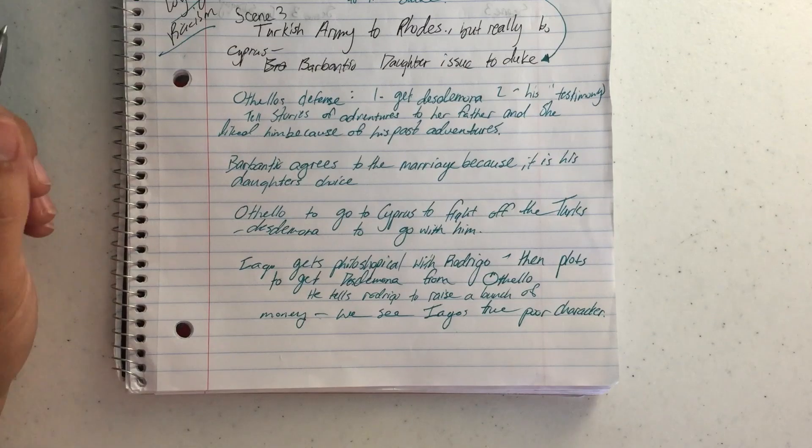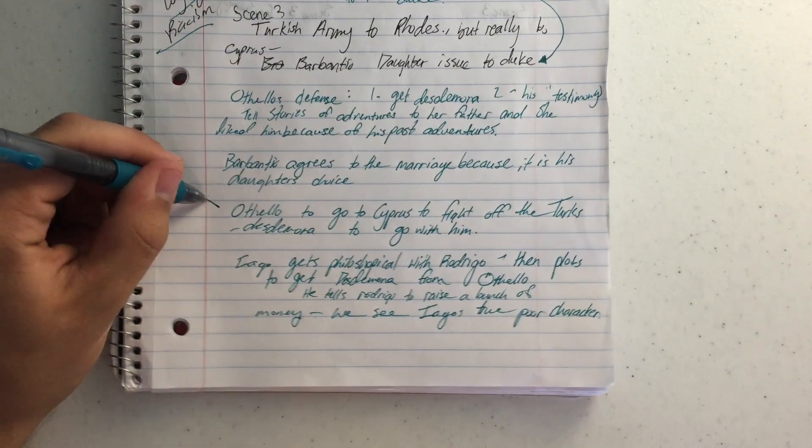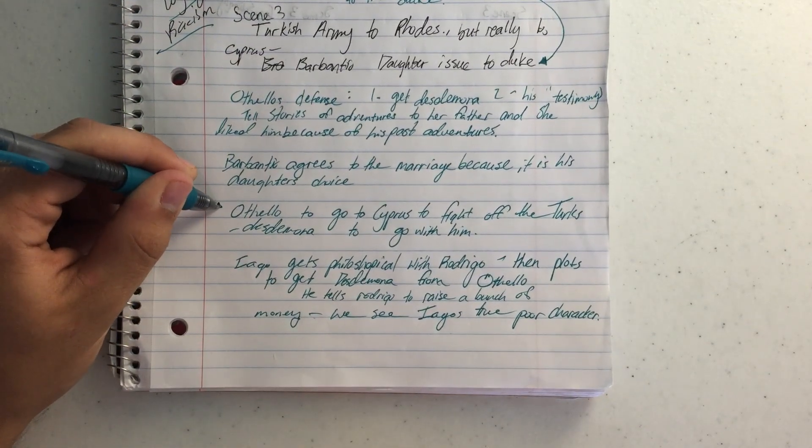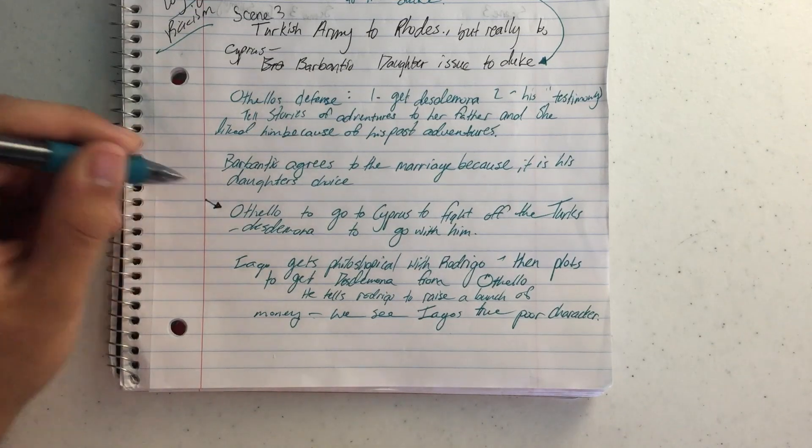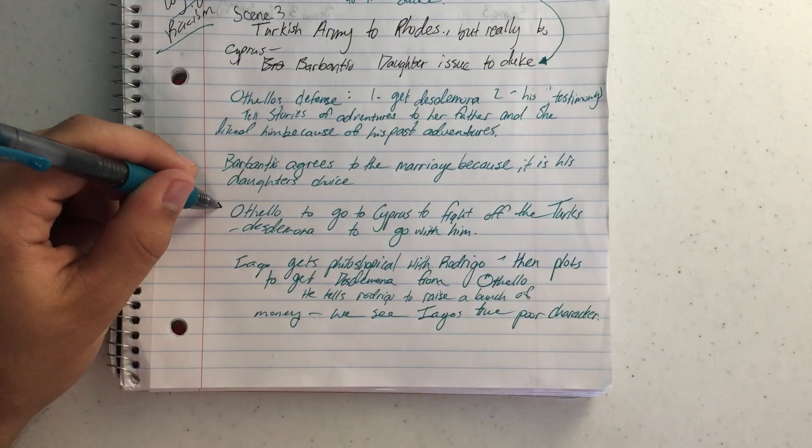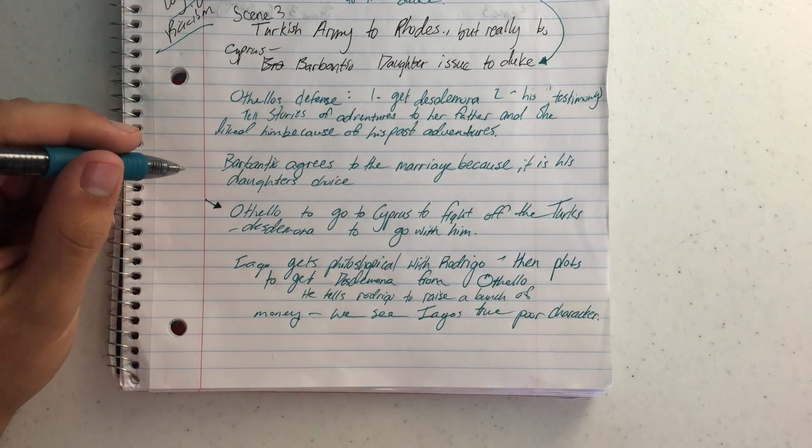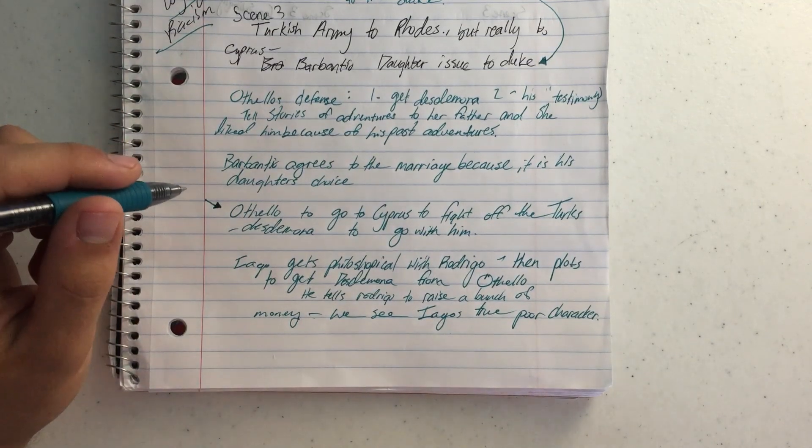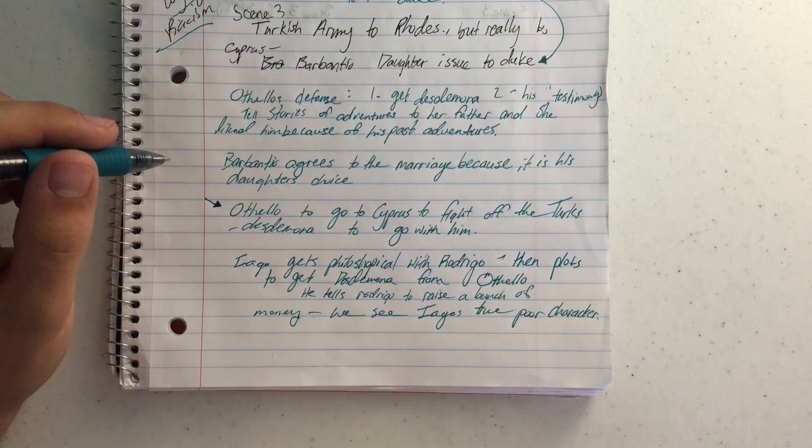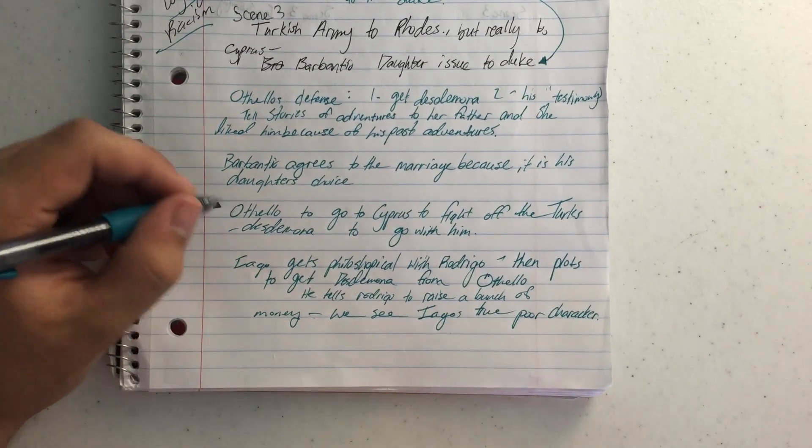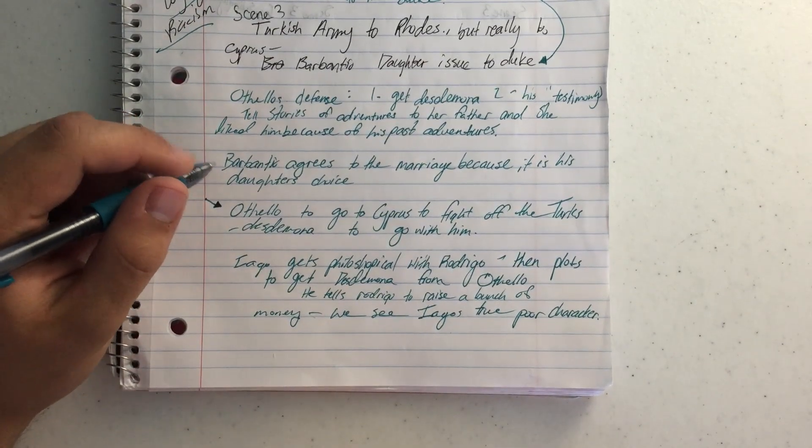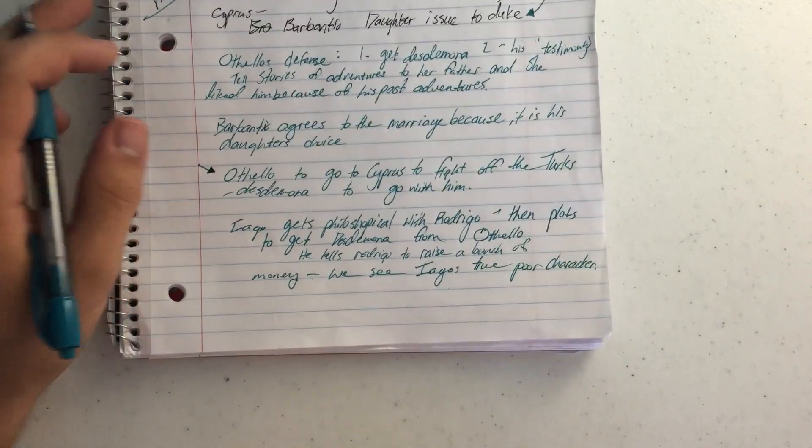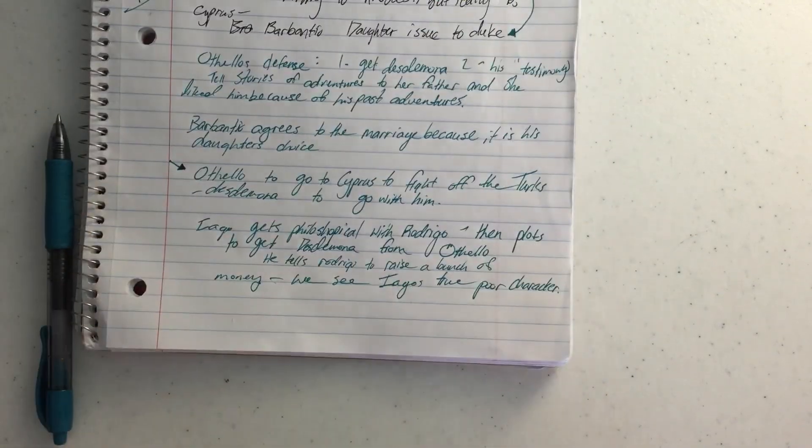Then the Duke reminds Othello, hey, Cyprus is being attacked. I'd like you out there. I know there's a skilled guy out there, but apparently you're better, so you need to get out there right away. He's like, okay, well, where's Desdemona going to go? Desdemona can't go with her father because she's not in her father's home anymore. So she wants to go with him, and Othello's like, hey, I can do that. That'd be okay. I wouldn't get distracted. So they leave to go do their stuff.